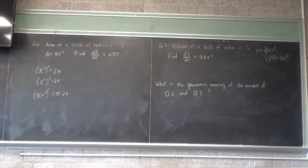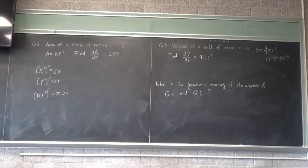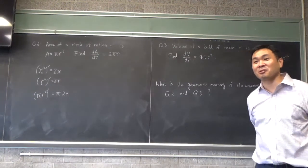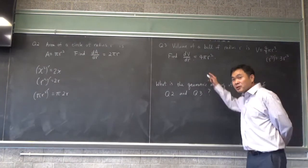But here's a harder question. What is the geometric meaning of the answers of Q2 and Q3? You see 2πr and 4πr². Is there a geometric meaning? 2πr is the circumference, isn't it? That's actually wonderful. I didn't expect anyone to answer. That's correct. 2πr is the circumference of the circle.